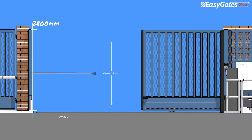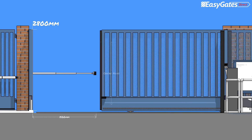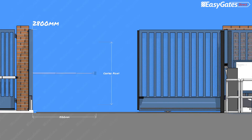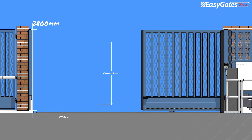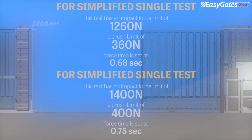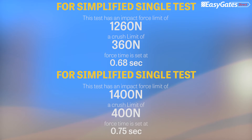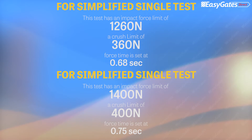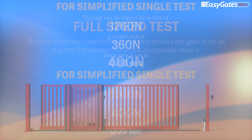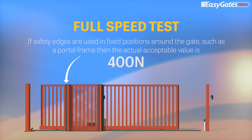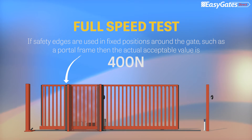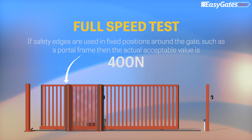If motor slowdown settings have been used to achieve these pass results, an impact test should be carried out at at least the 1500mm separation position and at the centre measurement height of the gate. The simple test has an impact force limit of 1260N. The standard test has an impact force limit of 1400N. The sliding gate full speed impact test assesses the suitability of portal fixed edges, which should be the same type used on the leading closing edge to ensure safe values are met.